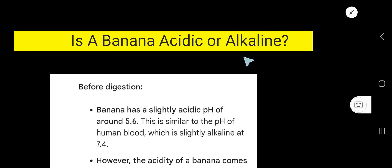Is a banana acidic or alkaline? Okay, actually in natural state, that is before eating, the pH of banana is 5.6. We know that pH 7 means neutral, less than 7 means acidic, and pH greater than 7 means alkaline. So at 5.6, in natural state, banana is acidic because 5.6 is less than 7.